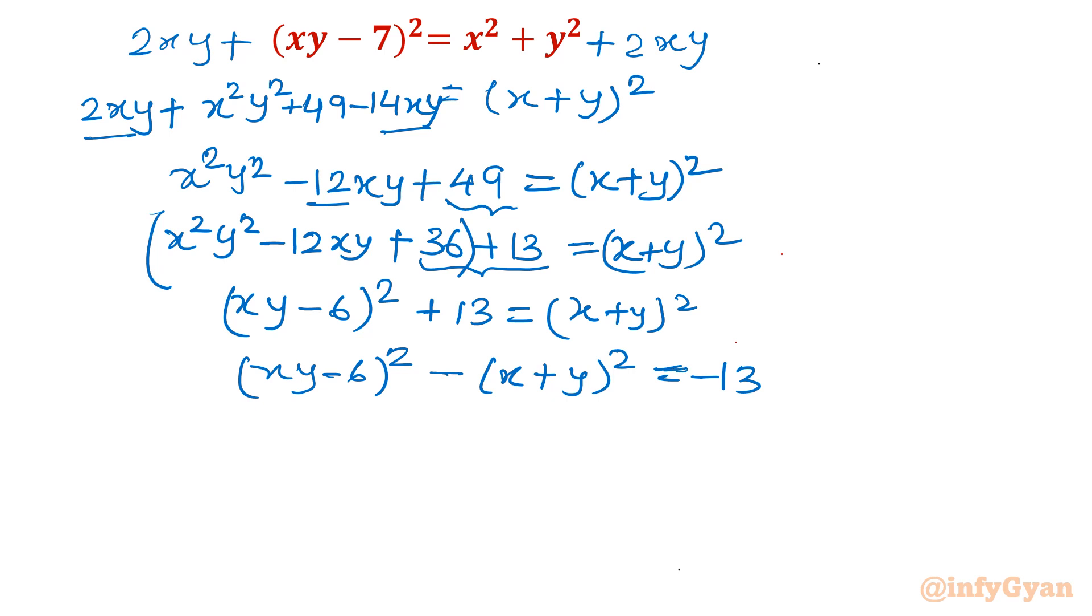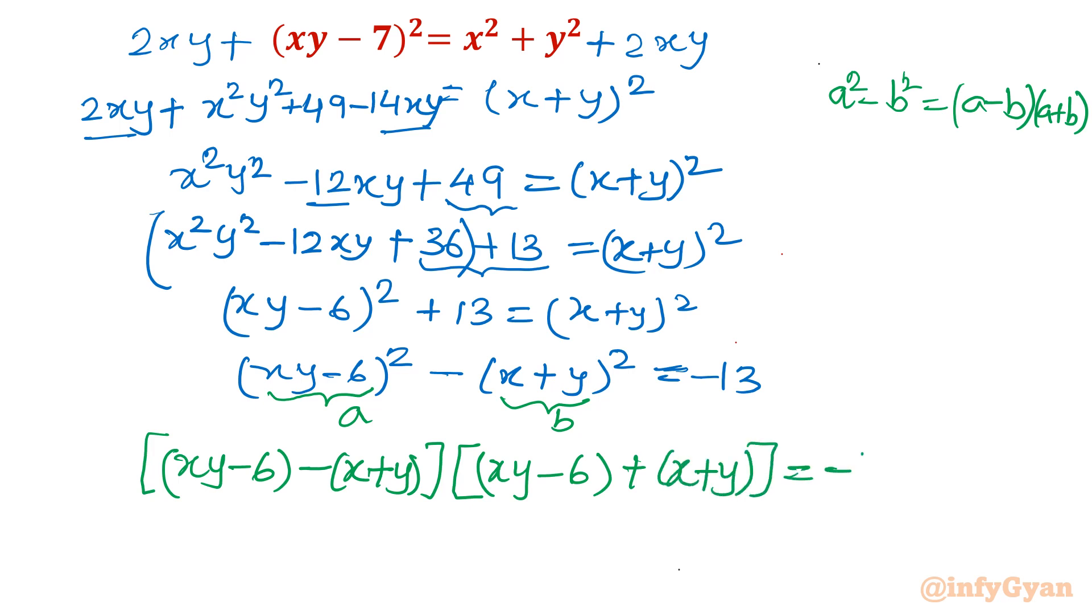Now I will use the algebraic identity, the difference of squares. a square minus b square equals a minus b times a plus b. So we will write xy minus 6 minus x plus y, times xy minus 6 plus x plus y. That product is equal to negative 13.